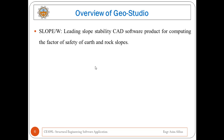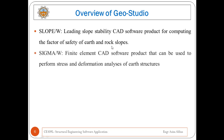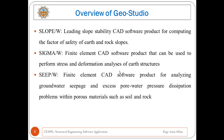Slope W is used for slope stability analysis where it computes the factor of safety of earth and rock slopes. Sigma W is a finite element CAD software product that can be used to perform stress and deformation analysis of earth structures. Seep W is also a finite element CAD software product for analyzing groundwater and excess pore water pressure dissipation problems within porous materials such as soil and rock.